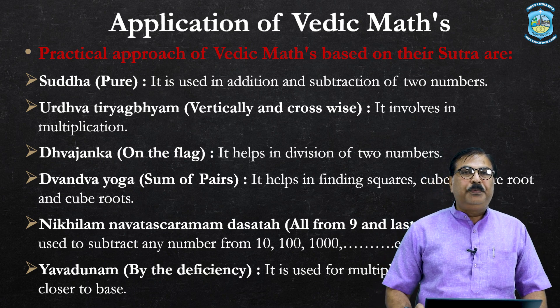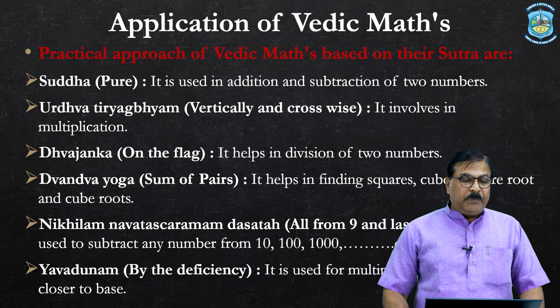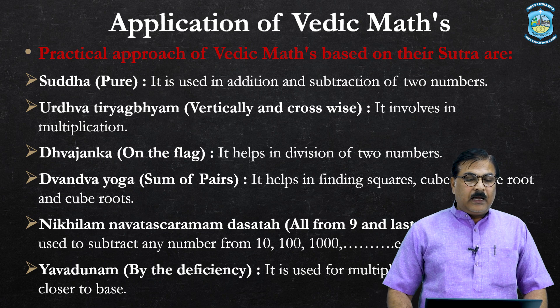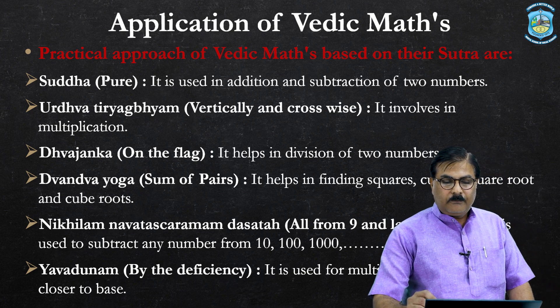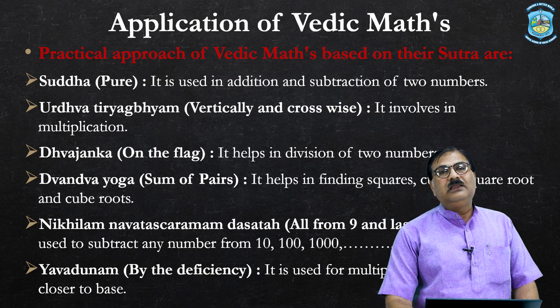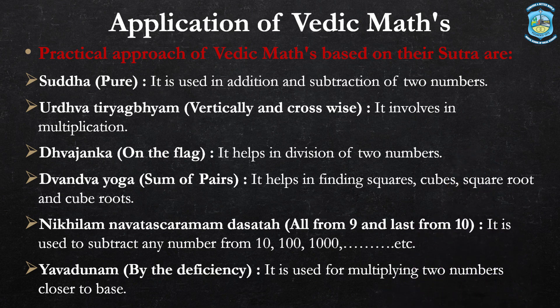Here are certain applications of Vedic maths based on their sutras. Shuddha — meaning pure — is used in addition and subtraction of two numbers. Urdhva Tiryabhyam — meaning vertically and crosswise — involves multiplication. Dvajanka — meaning on the flag — helps in division of two numbers. Dvandva Yoga — meaning sum of pairs — helps in finding squares, cubes, square roots, and cube roots. Niklam Navatsyakaramam Dasatah — meaning all from nine and last from ten — is used to subtract any number from a base number like ten, hundred, thousand, lakhs, or crores.